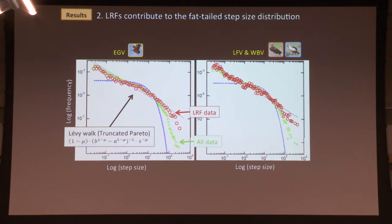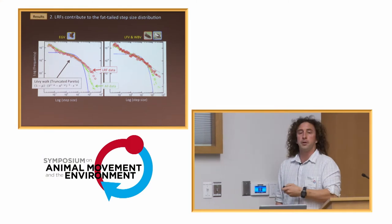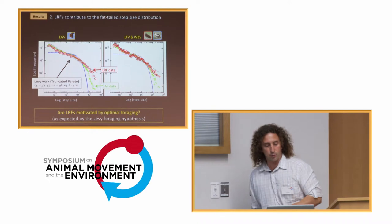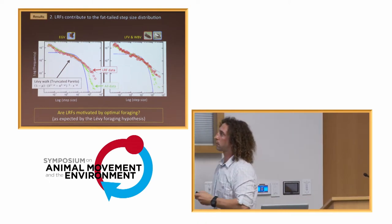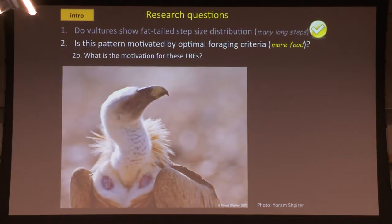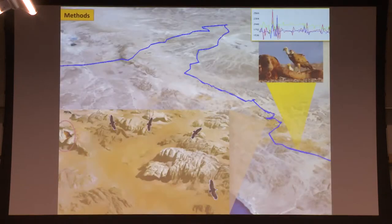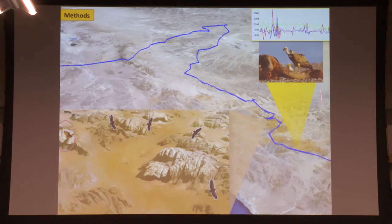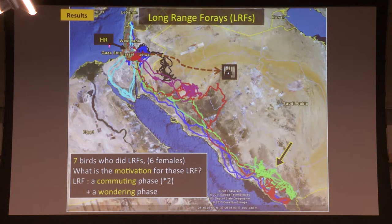Adding the LRF data in red to the same graph, you can see that although rare, LRFs are characterized by a fatter tail — more similar to the Levy distributions you might expect. So these LRFs are important in the context of long-range movements. We want to ask whether they are motivated by optimal foraging. Due to our tracking methods, we can follow individuals, know where they roosted, and using the critically important accelerometer data, we can actually identify eating events even without direct observation.